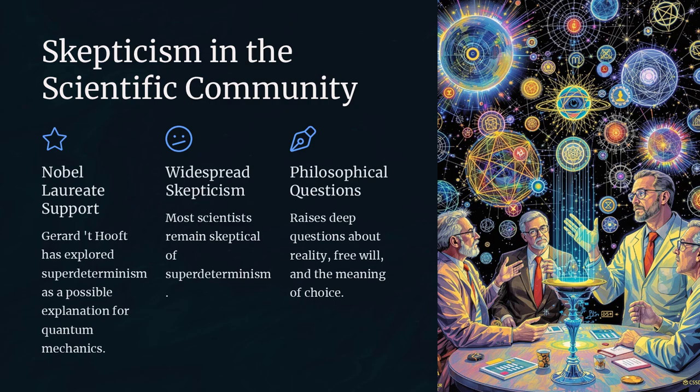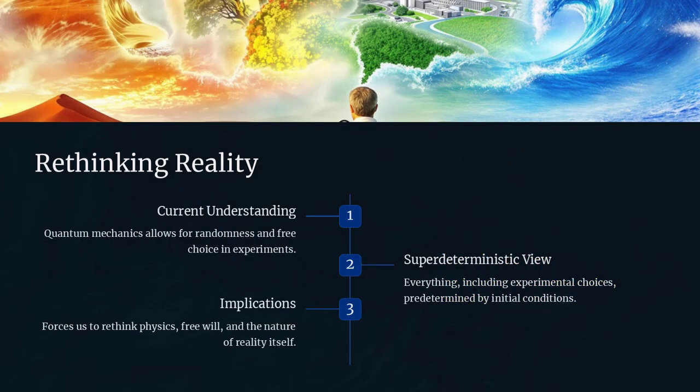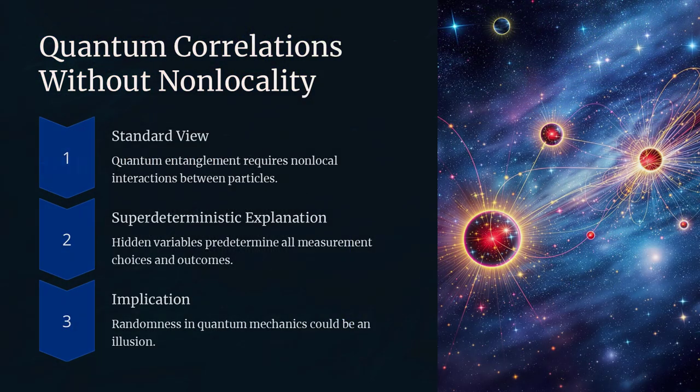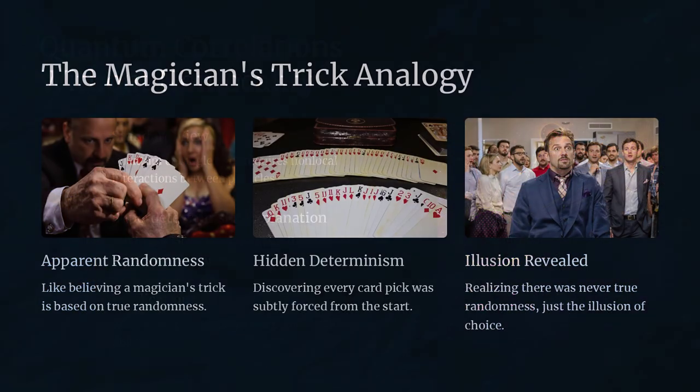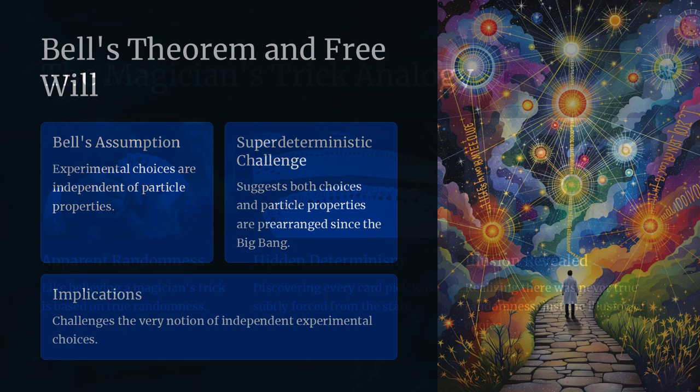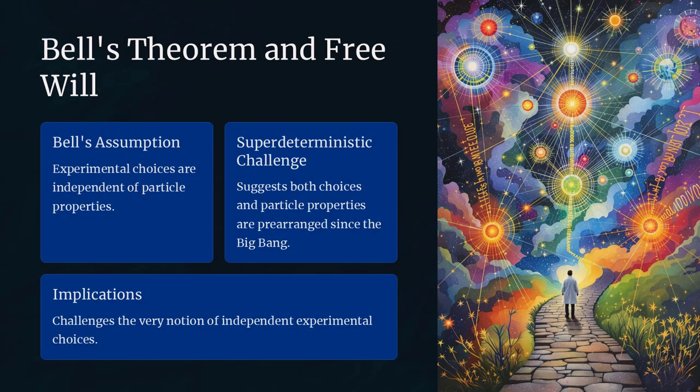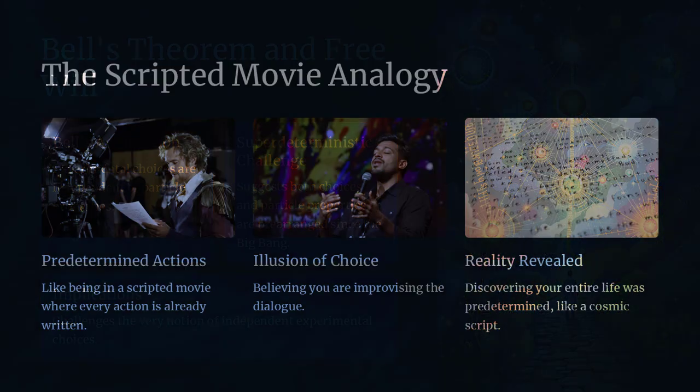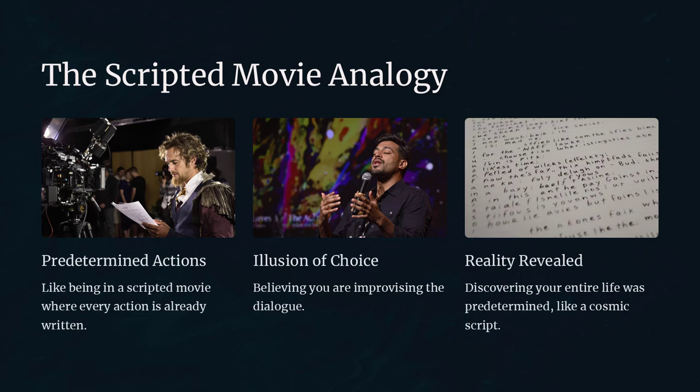In quantum physics, Bell's theorem is a key result that proves no local hidden variable theory can reproduce all the predictions of quantum mechanics unless we allow for spooky action at a distance, quantum entanglement. However, Bell's argument assumes that experimenters can freely choose their measurement settings. But what if they can't?